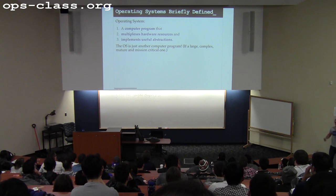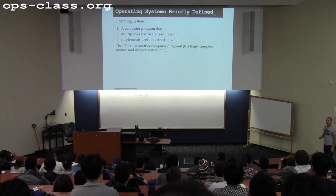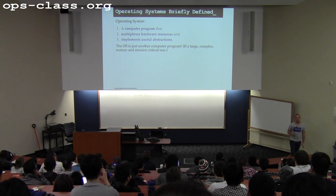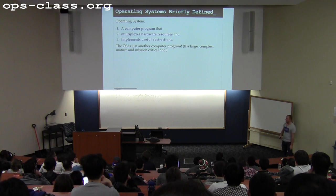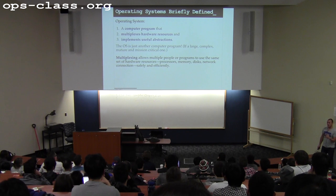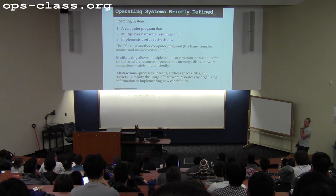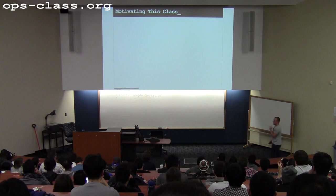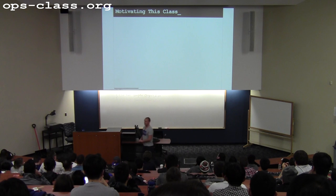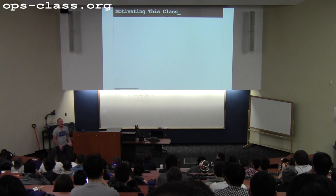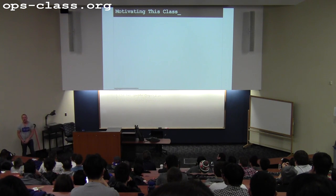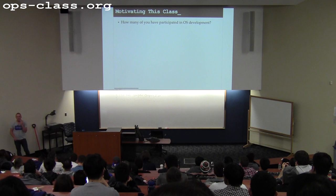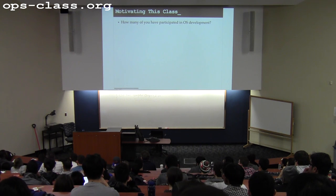As I pointed out, the fact that these are the operating system's responsibilities means that despite the fact it's just a computer program, it is also important. The degree to which these things are done well has a lot to do with how well the machine works. So let's step back and ask ourselves: who cares? This is a course on computer operating systems — why would we study them? How many of you have ever written a line of code that appears in some operating system?